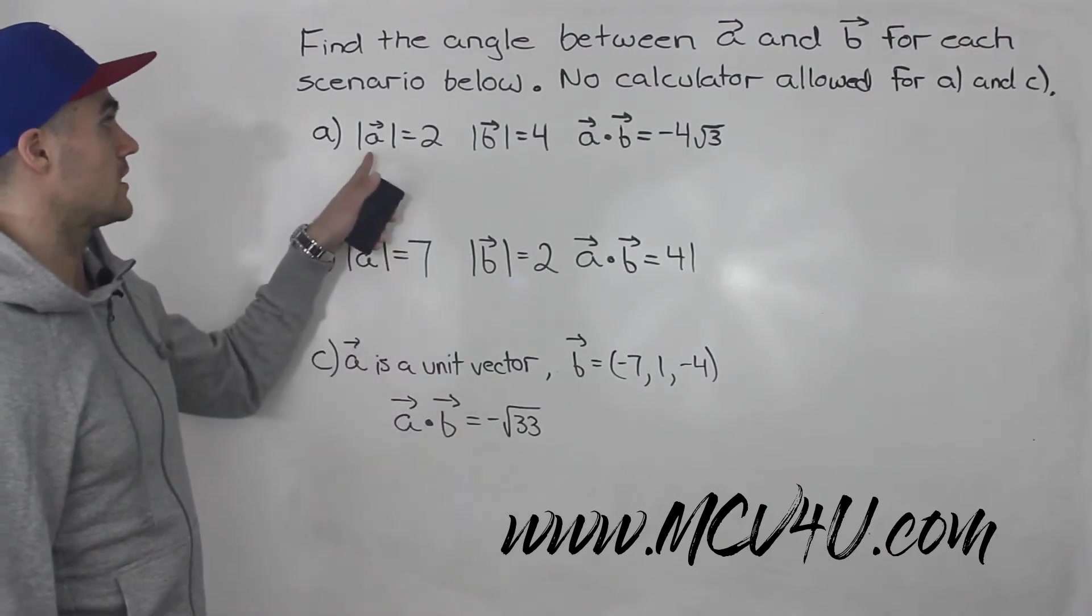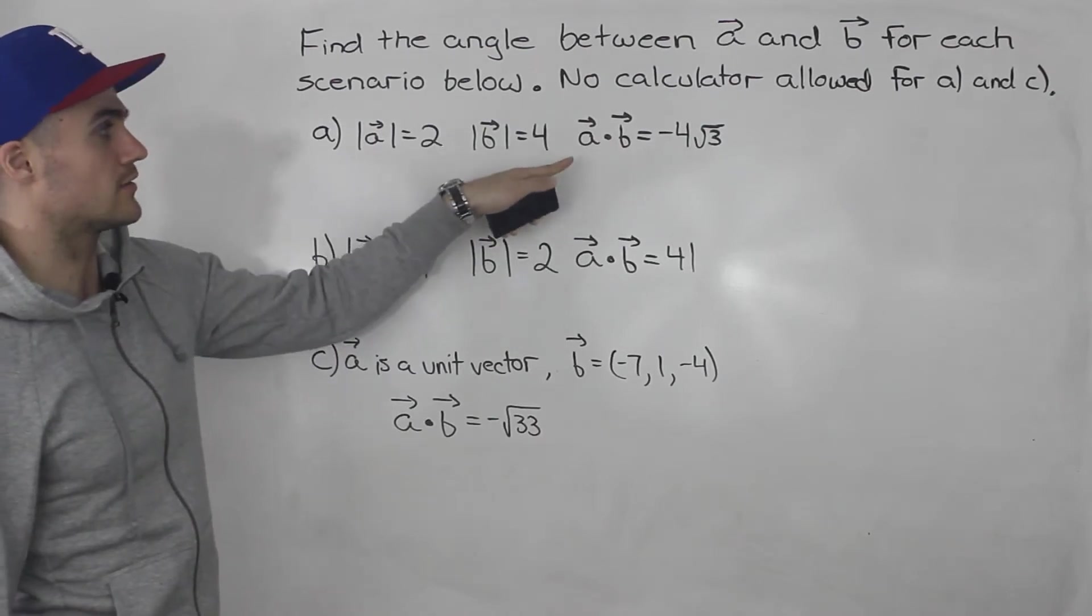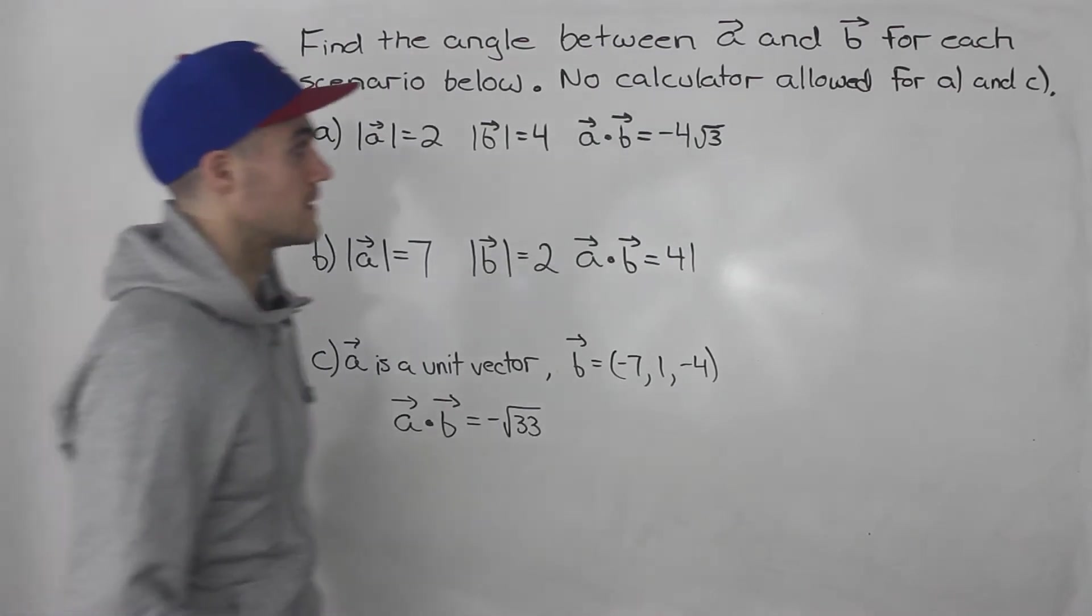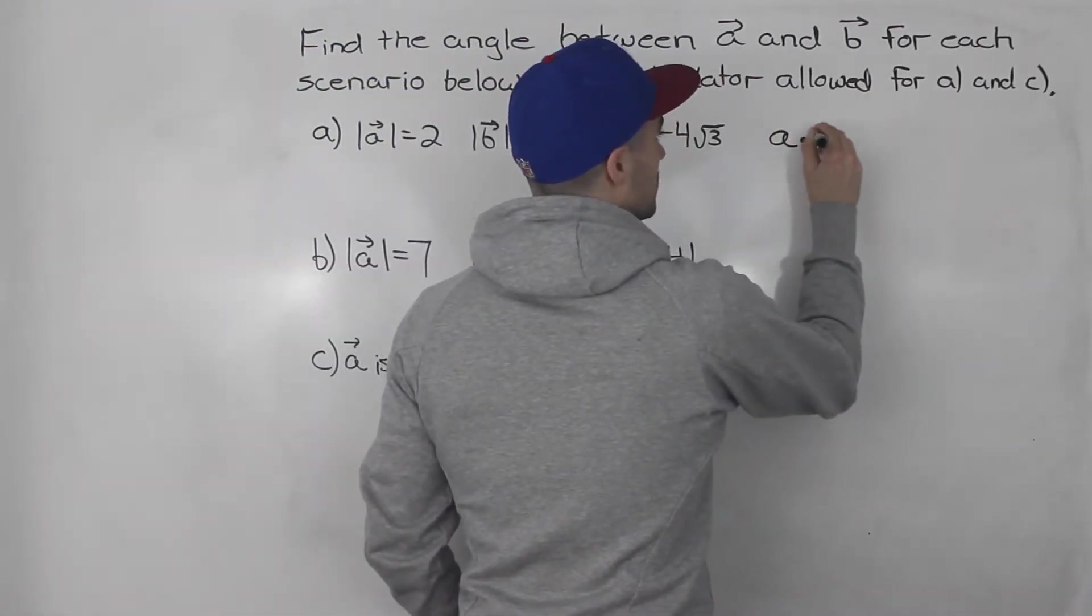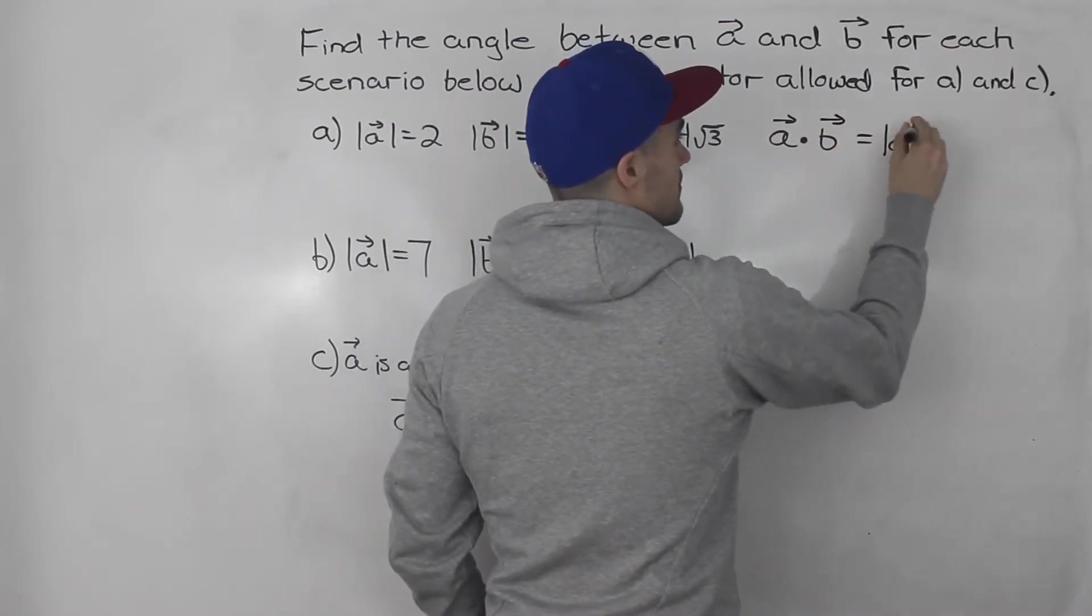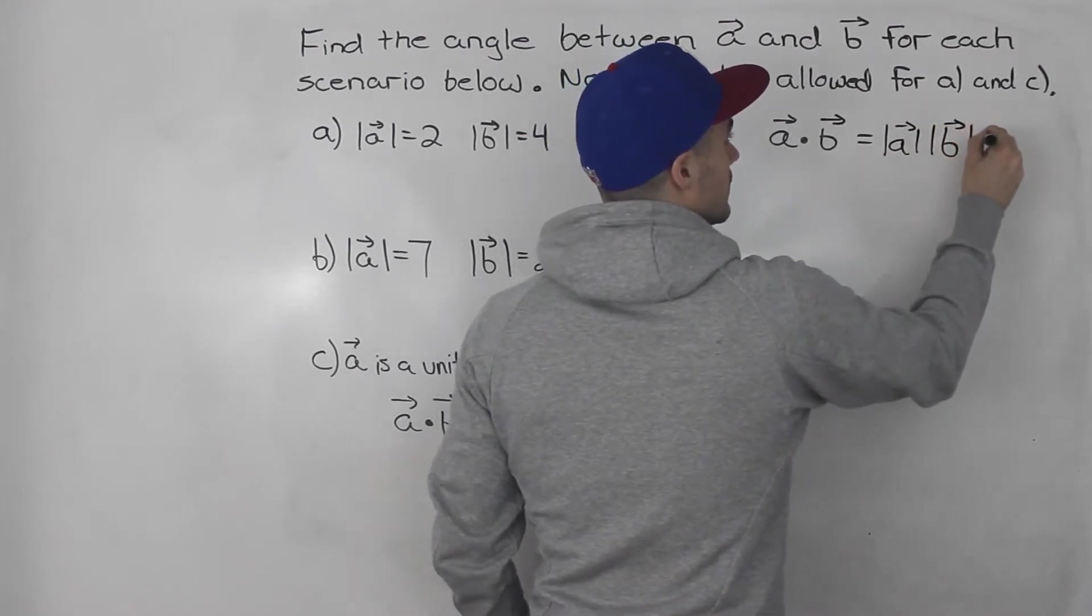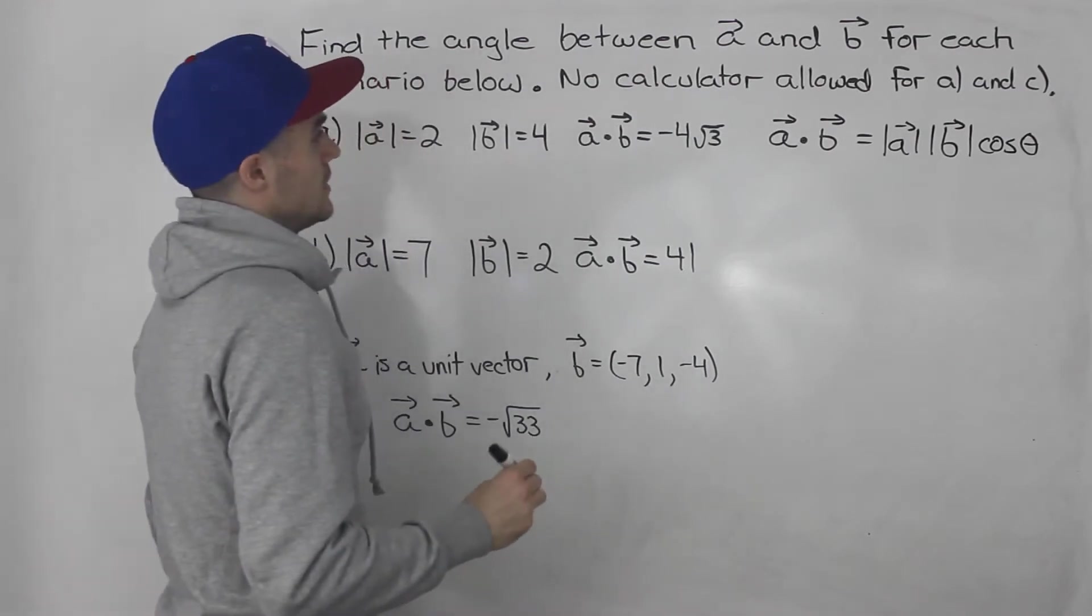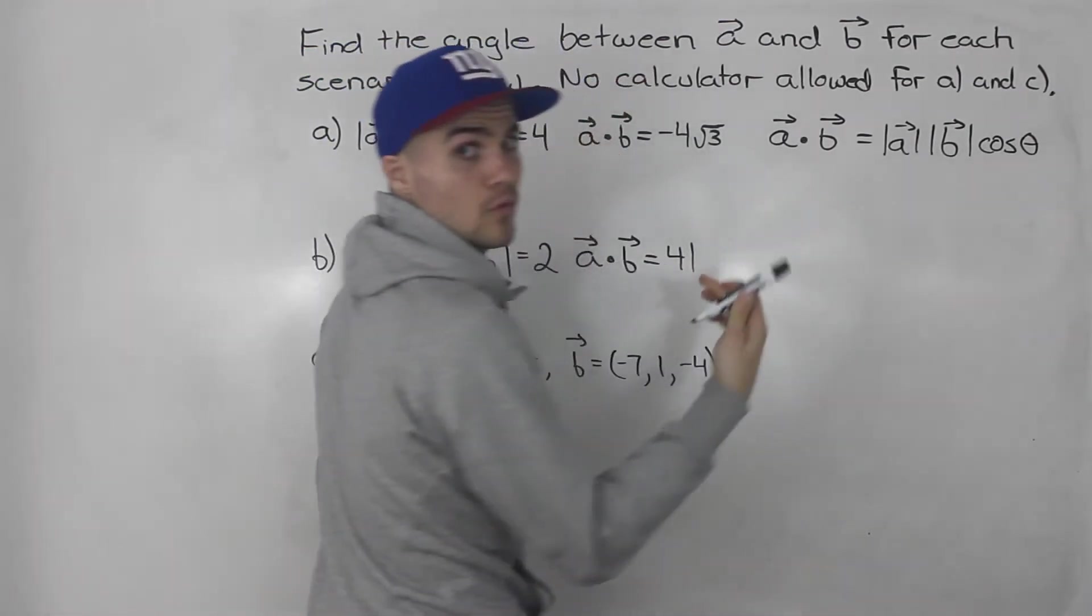So in part a, we're given the magnitude of a is 2, magnitude of b is 4, and the dot product between a and b is negative 4 root 3. So we're going to be using the formula where the dot product between two vectors is the magnitude of one of the vectors times the magnitude of the other vector times cos theta.